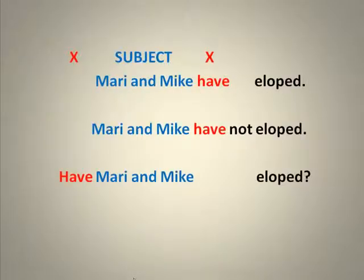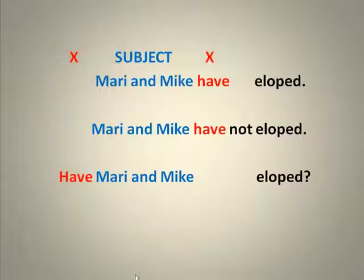'Marie and Mike have eloped.' 'Marie and Mike have not eloped.' 'Have' is the X word. I can move it to the front to make the yes/no question: 'Have Marie and Mike eloped?' And I see that 'Marie and Mike' are the words in that space between the two positions of 'have.' That's the subject. We're really starting to see that the subject is more a place in a sentence rather than any specific thing that we can explain.